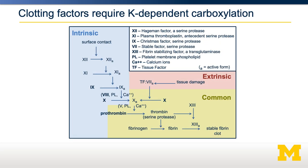Blood clotting is a complex pathway, and it can be stimulated through either surface contact in the intrinsic pathway or through tissue damage in what's called the extrinsic pathway. This causes a cascade of proteolytic reactions which activate enzymes in a series of events resulting in the activation of fibrin and the formation of a stable fibrin clot. While only 26 proteins undergo gamma-glutamyl carboxylation, four of those 26 are involved in this clotting pathway: Factor 9, Factor 8, Factor 10, and prothrombin.